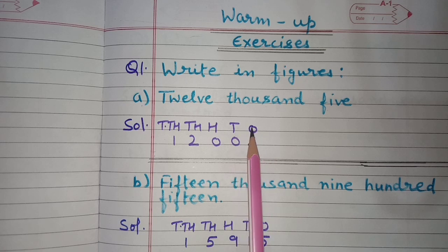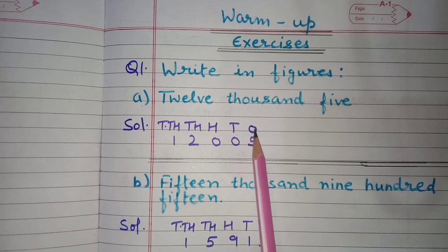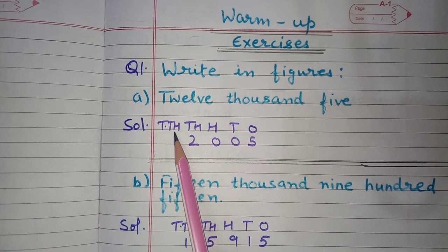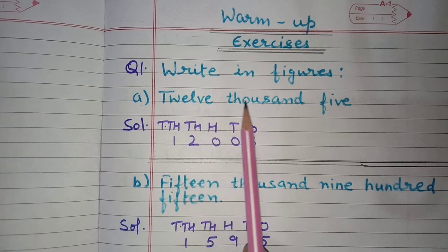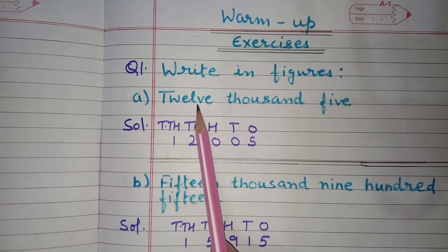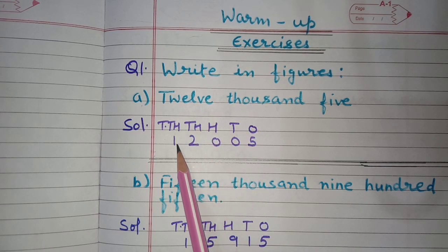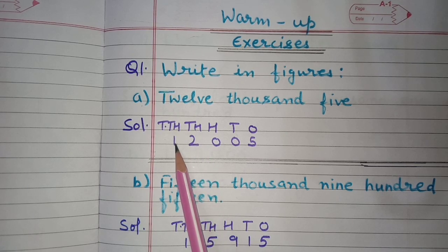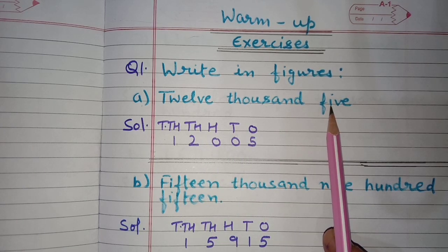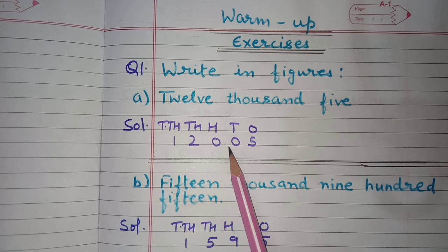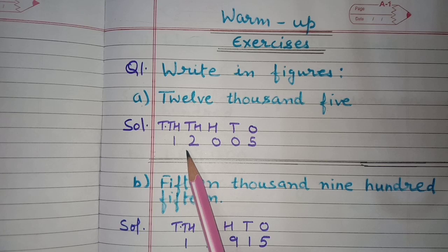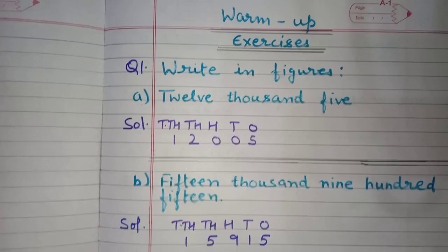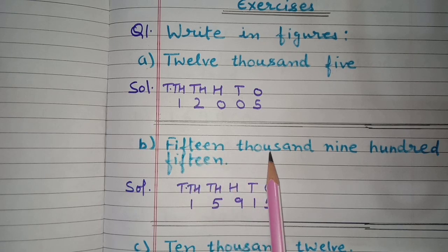To write the given number names in figures, we first mention the place values: ones, tens, hundreds, thousands, and ten thousands. For twelve thousand, one will come under ten thousands and two under the thousands place, making twelve thousands. Then five will be written at the ones place, and zeros at hundreds and tens. So it is 12,005.